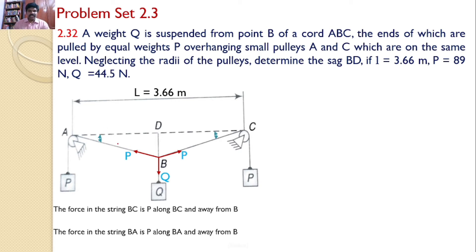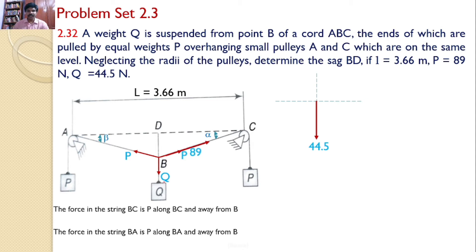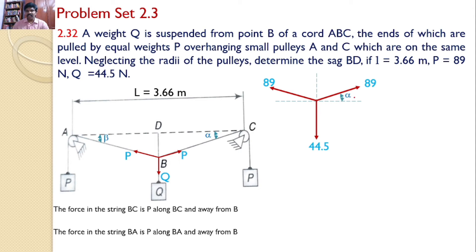Let this angle be alpha and let this angle be beta. Since we don't know these angles and no relation is given between them, we will assume these two angles are different — alpha and beta. Let us transfer all the forces onto a separate X-Y plane for easy analysis. The force Q is 44.5 Newtons acting downwards. The force P is 89 Newtons, and another force P is 89 Newtons. BC makes an angle alpha with the horizontal, and AB makes an angle beta with the horizontal.